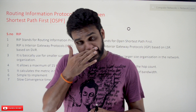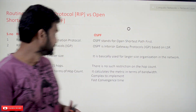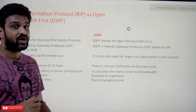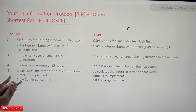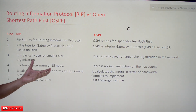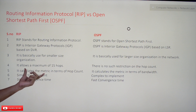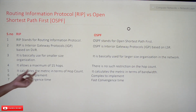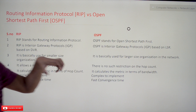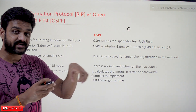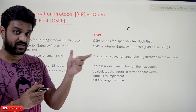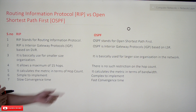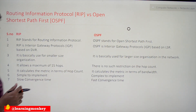RIP allows a maximum of 15 hops — the infinity is represented by 15 hops. OSPF has no such restriction on hop count, because OSPF does not have the count-to-infinity problem that RIP has. Regarding metrics: RIP calculates the shortest path metric in terms of hop count, whereas OSPF uses bandwidth as its metric.